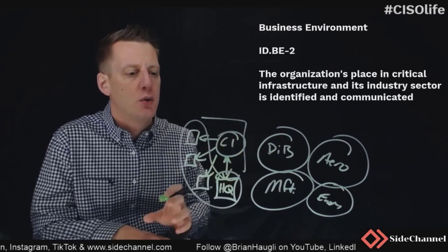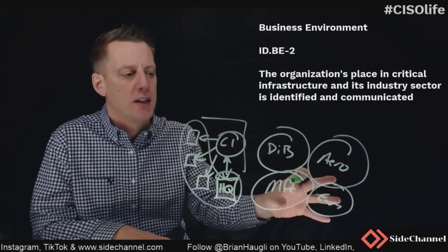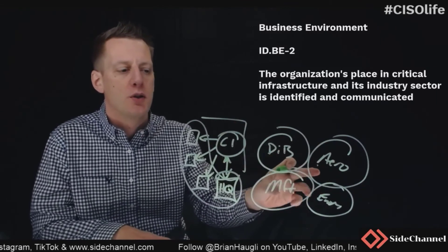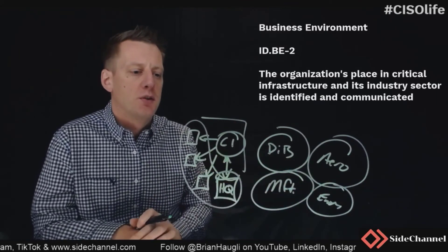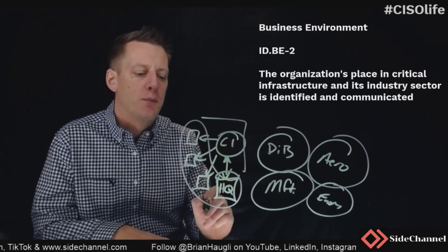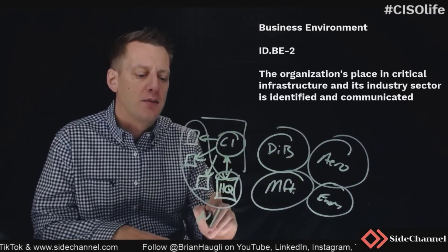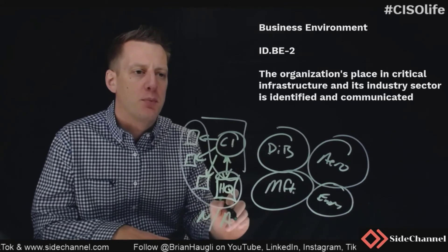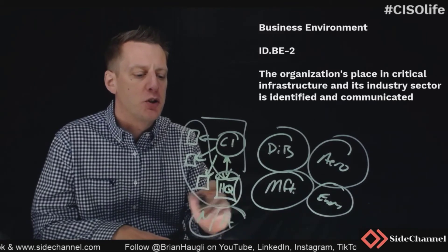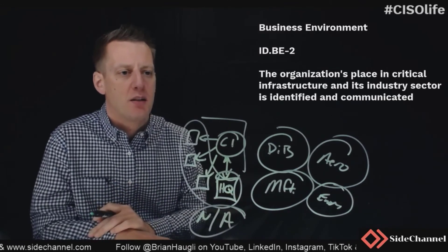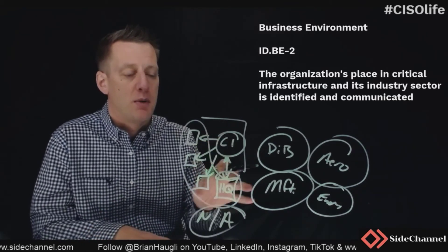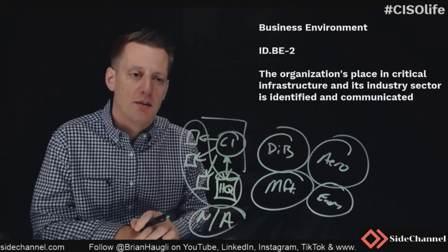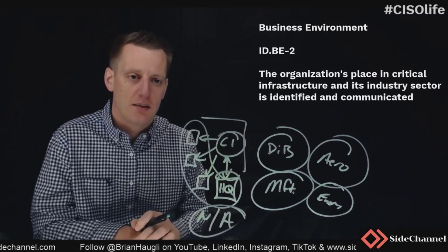BE-2 — if you don't sit within these, and you'll know if you do, it's probably an easy one to label as not applicable as you're doing your assessment, and just move on to the next.